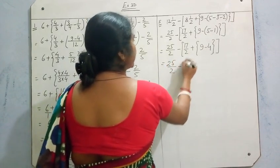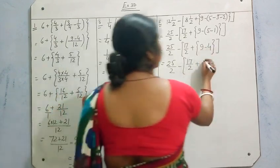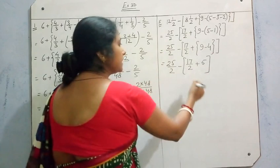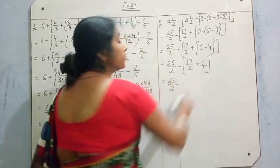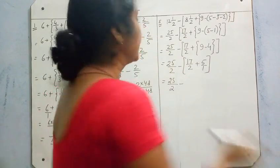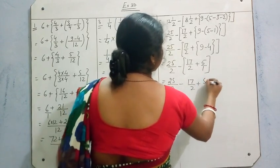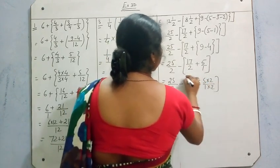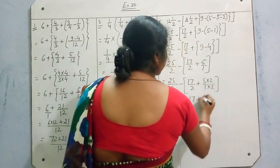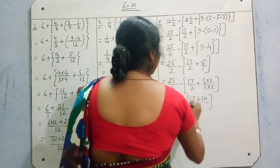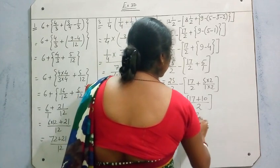Now we have 25/2 minus [17/2 plus {9 minus 4}]. The curly bracket gives 5. Now 5 is 5/1, and we take LCM of 2 inside the square bracket: 17/2 plus 5 times 2 over 1 times 2, giving 17/2 plus 10/2, which is 27/2. So we have 25/2 minus 27/2.